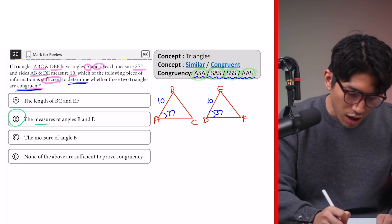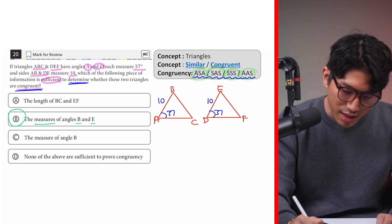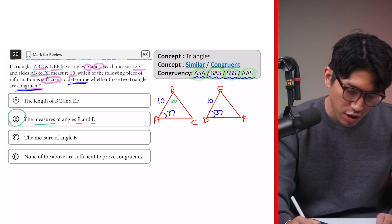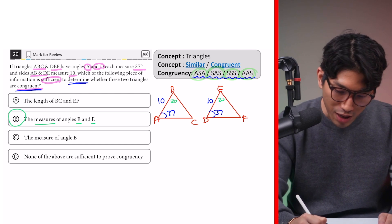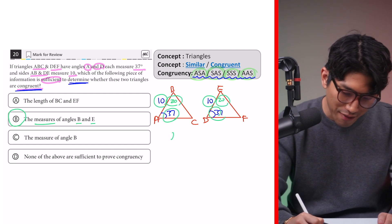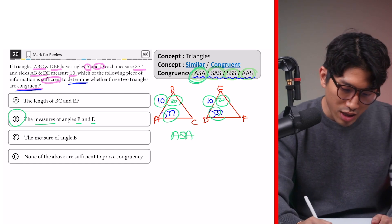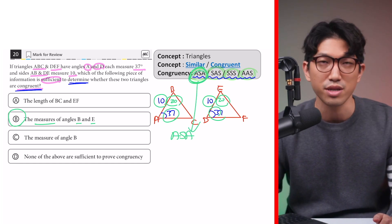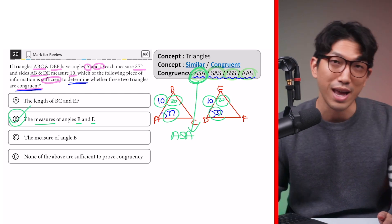But what about choice B, the measure of angle B and E? So B and E, let's say it's something like 20 here and then 20 here. If we do that, we have angle, side, angle, angle, side, angle. So we have ASA, which is one of the conditions to prove congruency. So as a result, that's going to be our answer. But wait, let's try out choice C just in case it works.